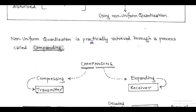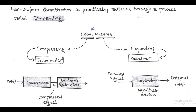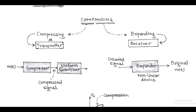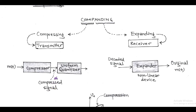Non-uniform quantization is practically achieved through a process called companding. The word companding is a combination of compressing and expanding — compressing at the transmitter side and expanding at the receiver. At the transmitter side, modulating signal M(t) is passed through a compressor, and the output of the compressor is a compressed signal having uniform step size. We can then use uniform quantization for the transmission of the coded signal.